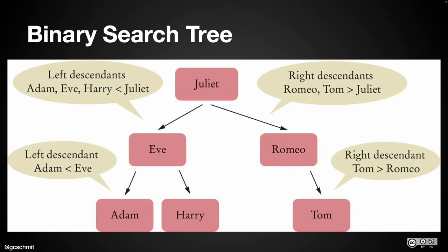If we have all these elements stored in a binary search tree, we can very quickly find something. If we're searching for Harry and we start at the root — Juliet — we know to look at the left child and can ignore the entire right subtree. When we get to Eve, we go to Eve's right child and ignore Eve's left subtree. That's how we can very efficiently — on the order of log n — find something in a binary search tree.